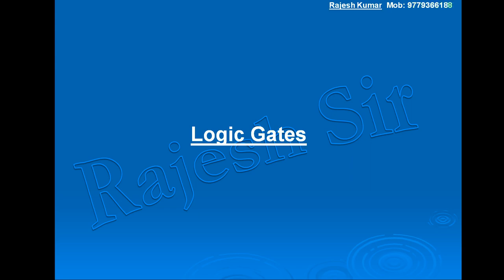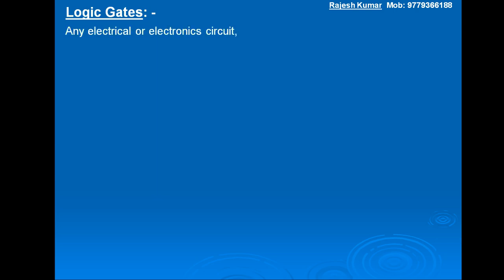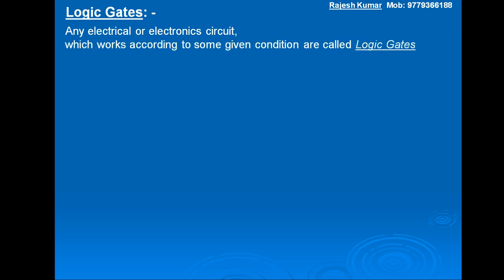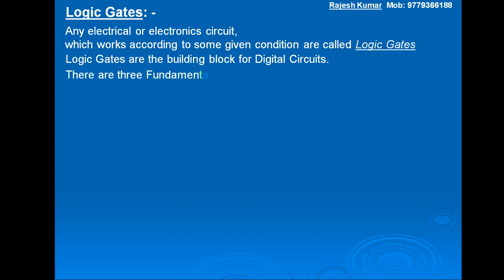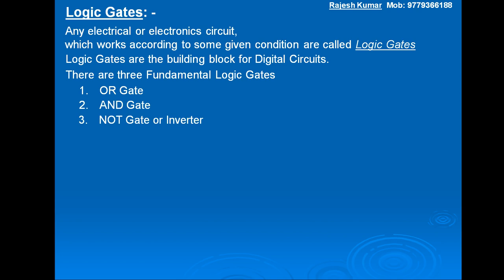We will discuss logic gates. Any electrical or electronic circuit which works according to some given condition is called a logic gate. Logic gates are the building blocks for digital circuits. There are three fundamental logic gates: number one, OR gate; number two, AND gate; number three, NOT gate, or inverter.